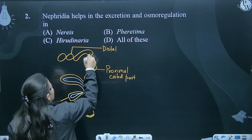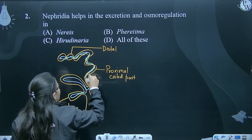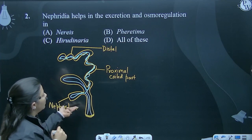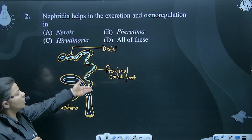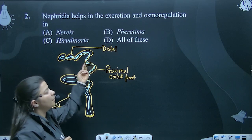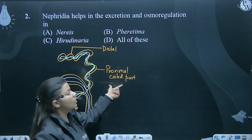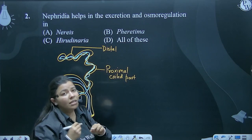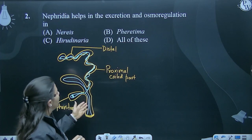This whole structure is somewhat like this. When we study the nephridia structure in detail, the nephrostome and the distal coiled part — the coiled part increases the surface area for osmoregulation and excretion.